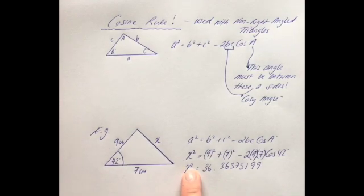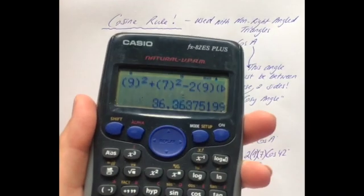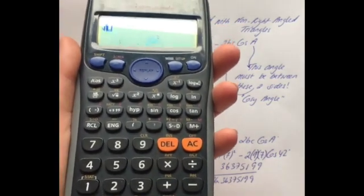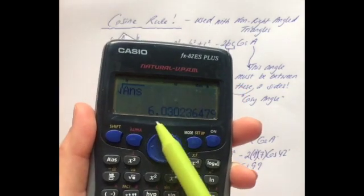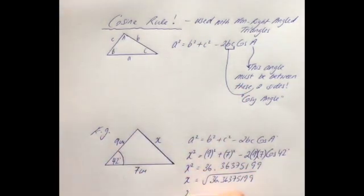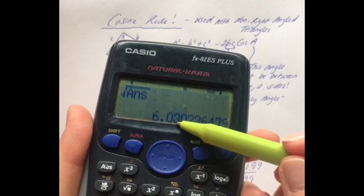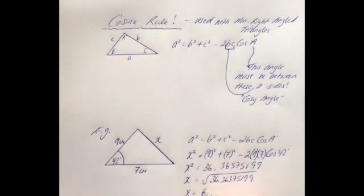Now to solve for x on its own: to undo a square we take the square root. With the answer still on the calculator display, press square root then answer, so we don't have to retype everything. We get 6.030, which to two decimal places is 6.03 — look at the digit after: 0 does not make the 3 bump up. The answer is 6.03 centimetres.